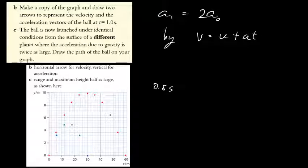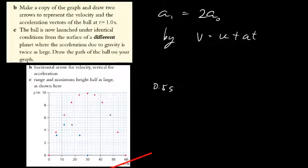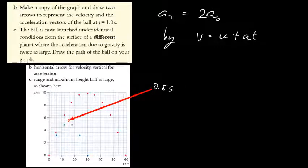For parts B and C, it's rather self-explanatory. For B, obviously the velocity is horizontal, and the acceleration is vertical pointing downward. For part C, the maximum height will be half as before, and the horizontal range will also be half as before. The 0.5-second point should be around here; since the photograph interval is just 0.2 seconds, this point would be missed. It still looks very symmetrical in terms of these axes.